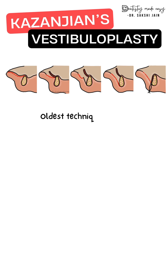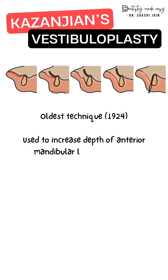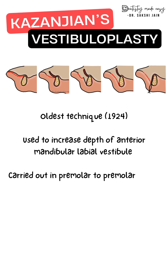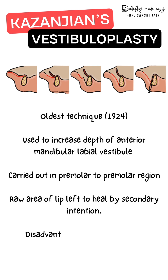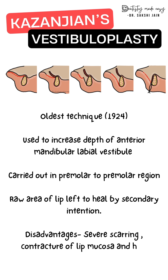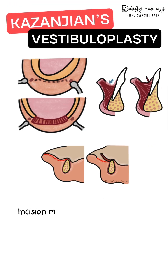The Kazanjian technique is the oldest technique, described in 1924. It is carried out in the premolar to premolar region only in the mandible. In this technique, the periosteum is left intact and it uses a mucosal flap from the inner aspect of the lower lip. The raw side of the lip is left to heal by secondary intention. Disadvantages include higher chances of relapse, severe scarring of the lip mucosa which decreases the flexibility of the lower lip, and contracture.